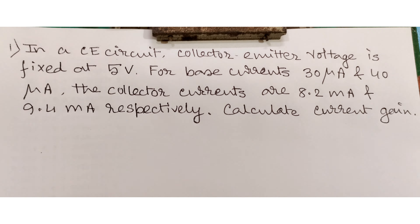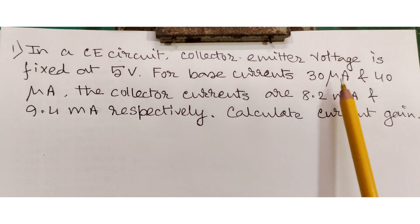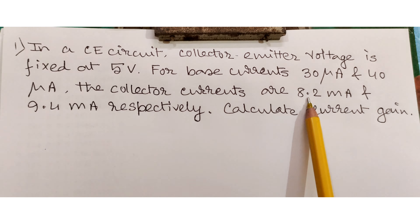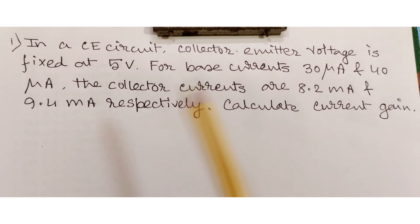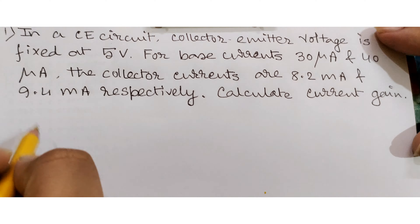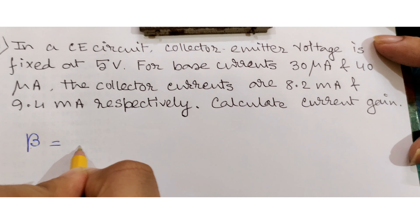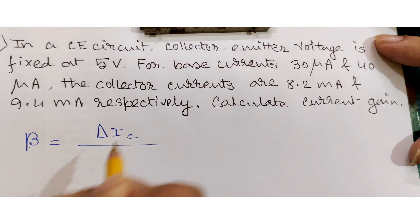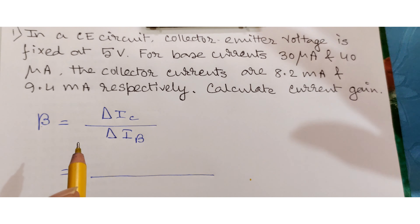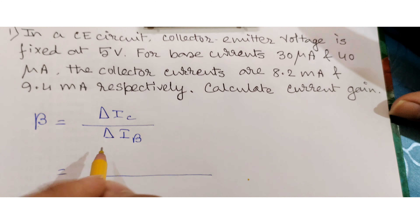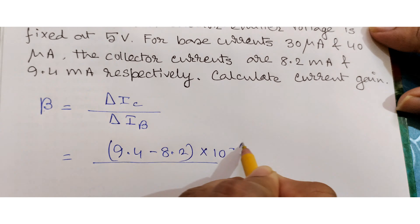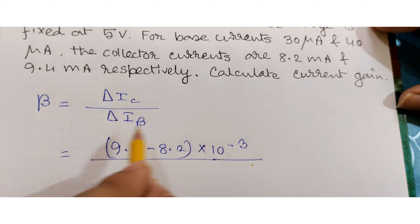For a CE circuit we have to calculate beta, the current gain for common emitter. Here we can see the base current is changing from 30 microamperes to 40 microamperes, and as a result the collector current is changing from 8.2 milliamperes to 9.4 milliamperes. Since the current is changing, this is AC beta. Beta AC is basically the change in collector current divided by the change in base current. Final value minus initial value: 9.4 minus 8.2 milliamperes.